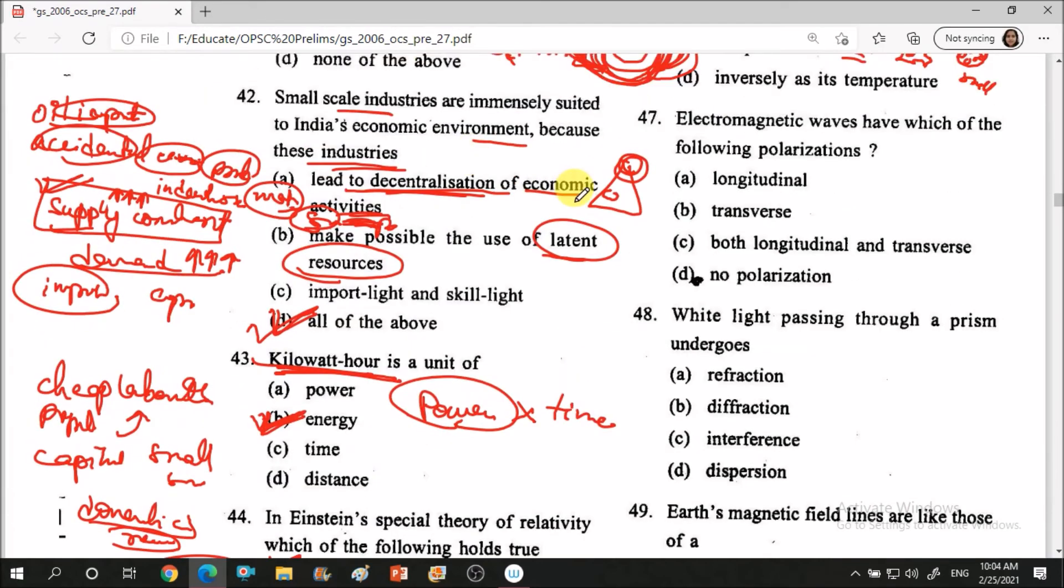Next question: electromagnetic waves have which of the following polarization? Polarization means what? Polarization means in which direction it is going, which side it is going. So if we see normal waves, what is polarization in waves?